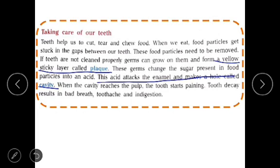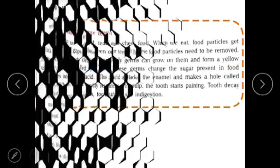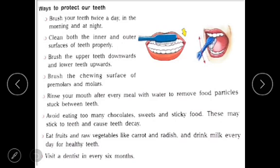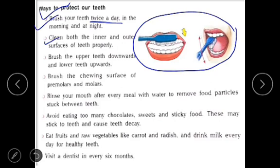The results of tooth decay include bad breath, toothache, and indigestion. As teeth are very important, every care should be taken to protect them. Brush your teeth twice a day, in the morning and at night. Clean both the inner and outer surfaces of teeth properly. Brush the upper teeth downwards and lower teeth upwards. Brush the chewing surface of premolars and molars. Rinse your mouth after every meal with water to remove food particles stuck between teeth.